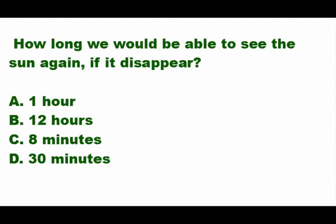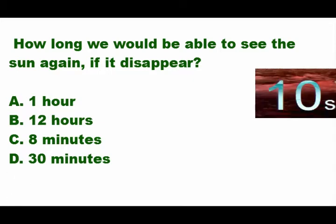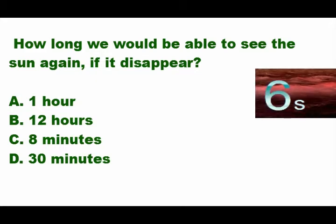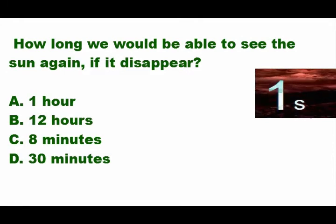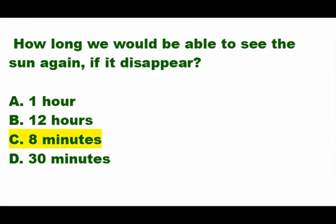Next question: how long would we be able to see the Sun again if it disappeared? Is it A) one hour, B) 12 hours, or C) eight minutes? The answer is letter C — eight minutes. We can see the Sun again if it disappeared within eight minutes.